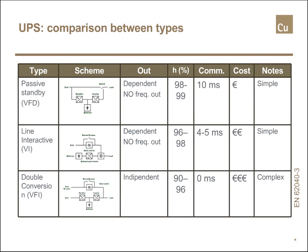Line interactive is again quite simple, costs a bit more than a passive standby, and we still have a dip when moving from grid to battery operation. The output is dependent on the input only from the point of view of frequency. The last line is dedicated to double conversion. This is the most complex layout, the cost is the highest, we don't have any dip moving from grid to battery operation, and the output is fully independent from the input.